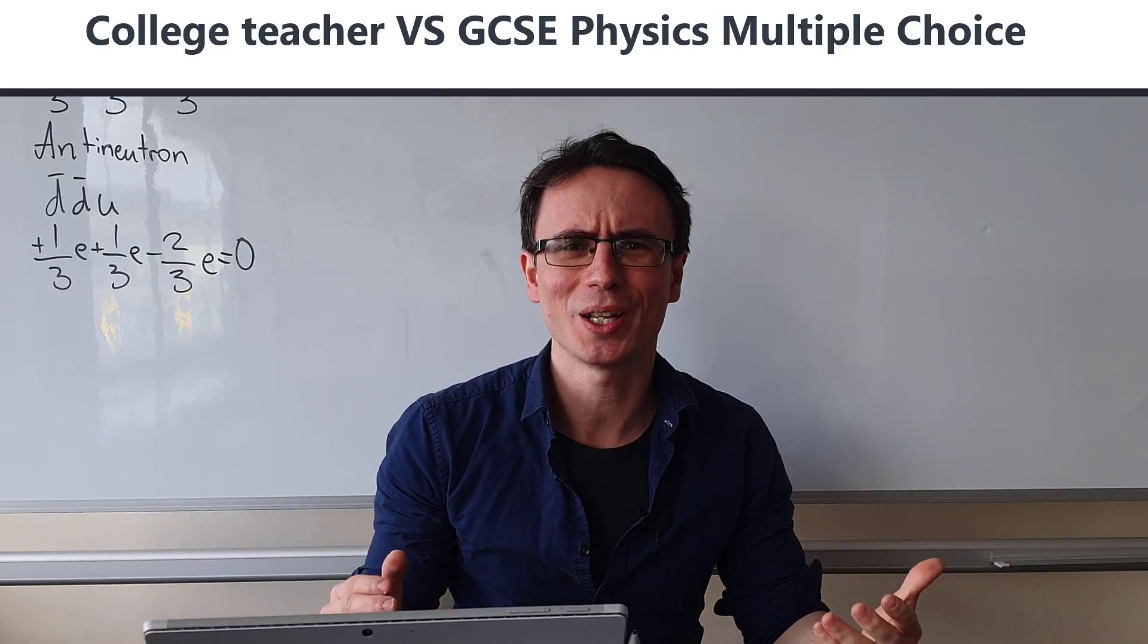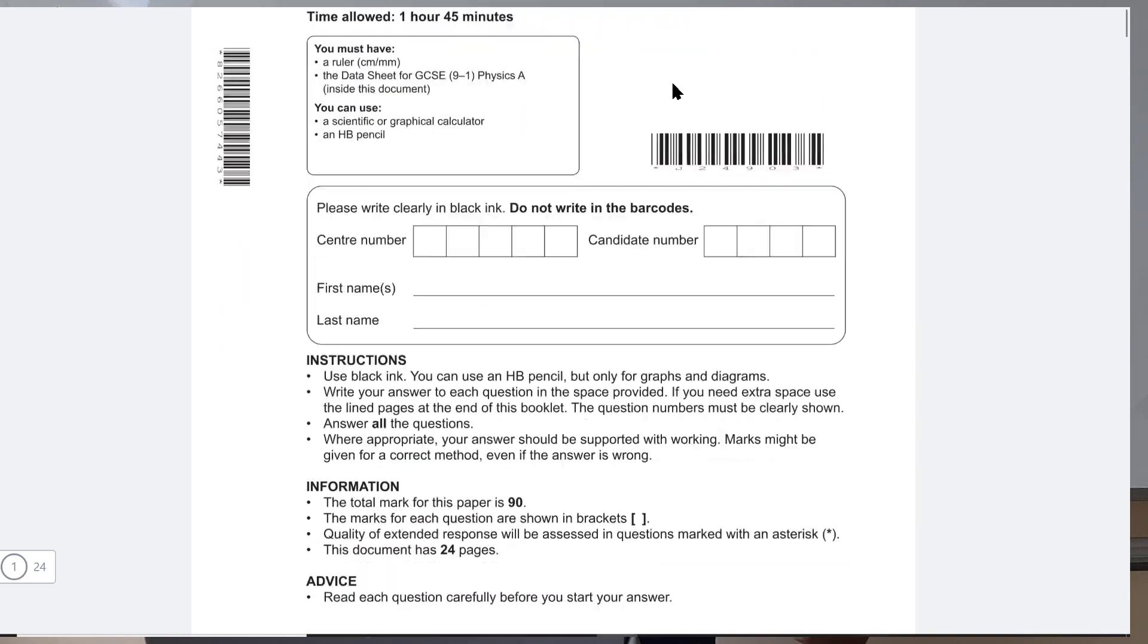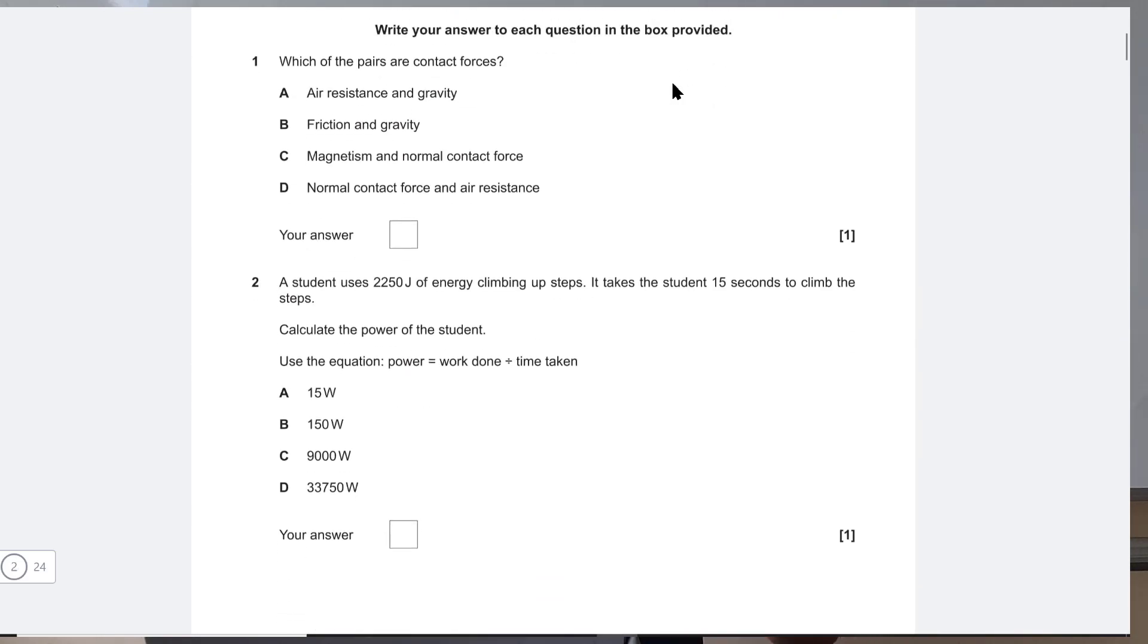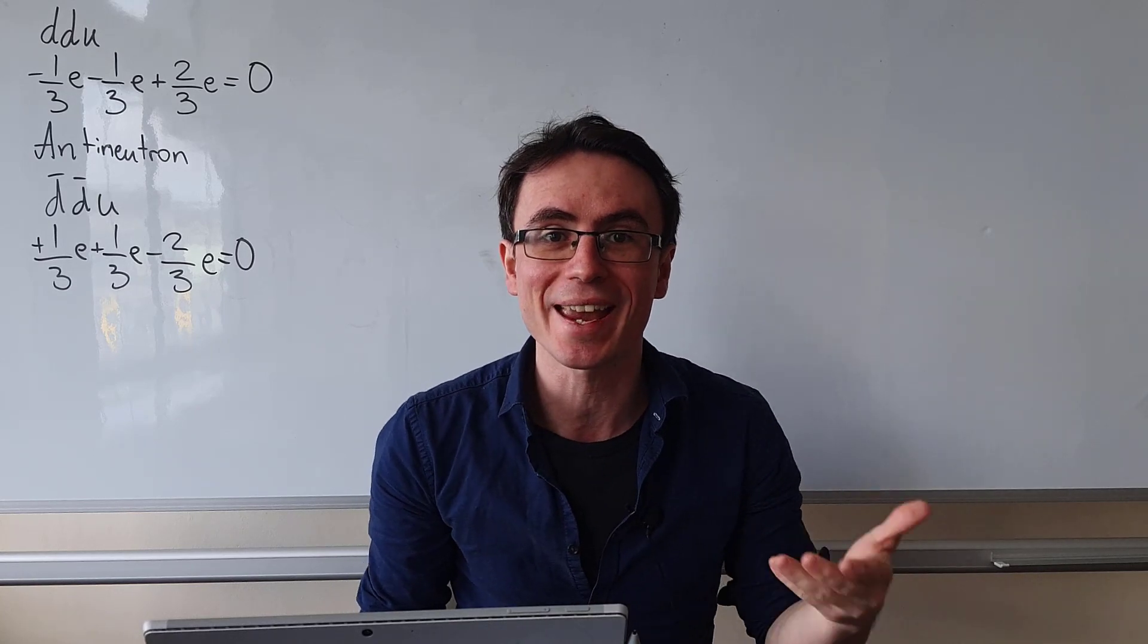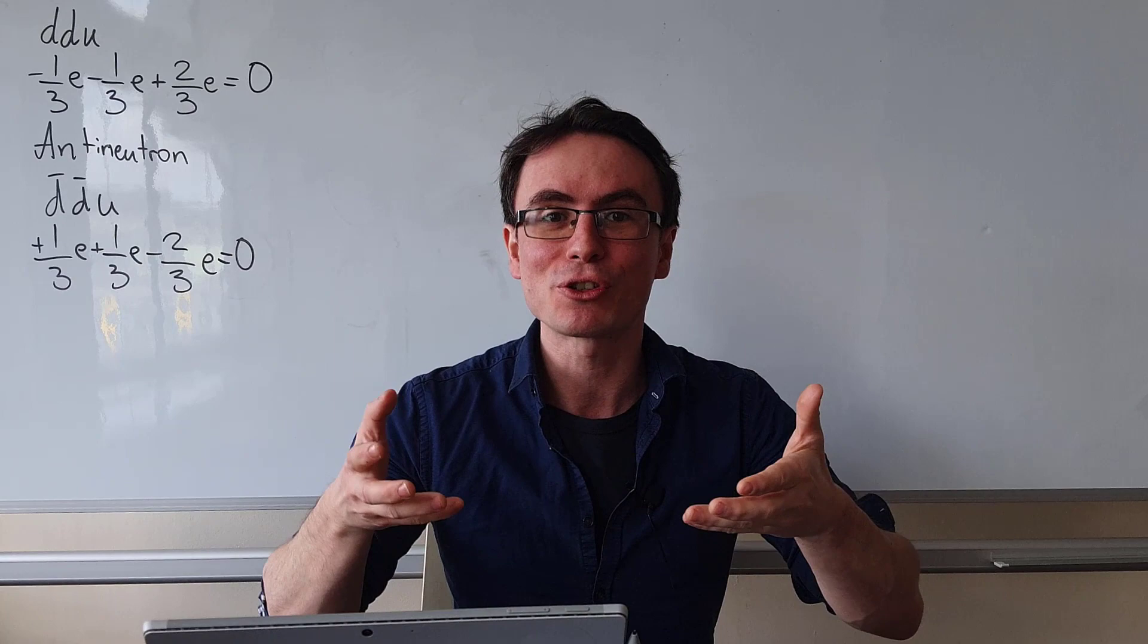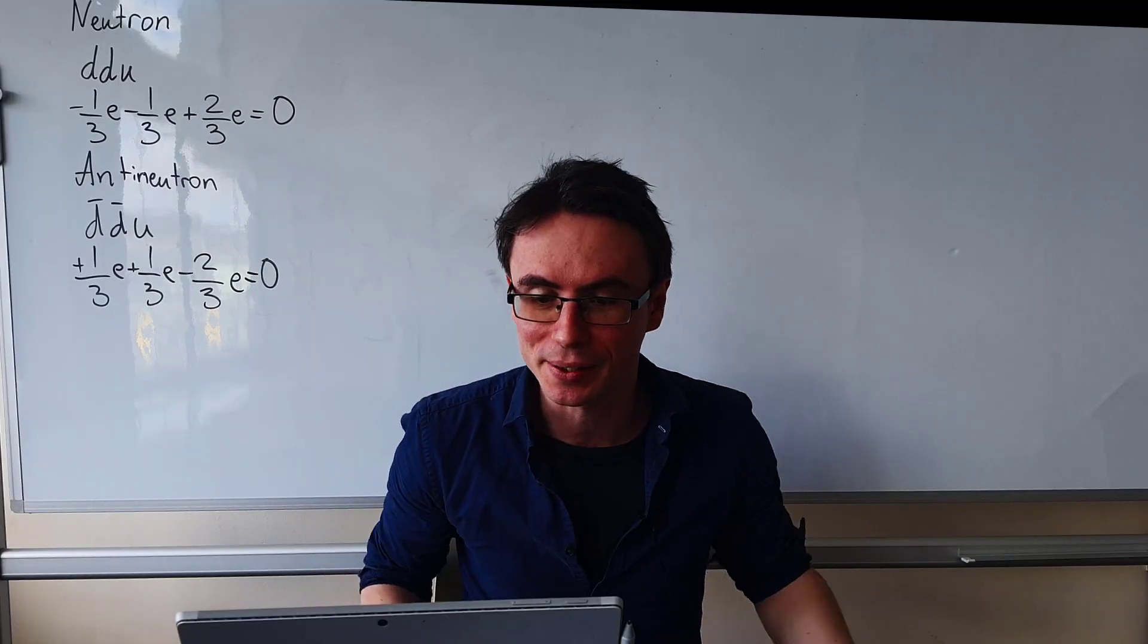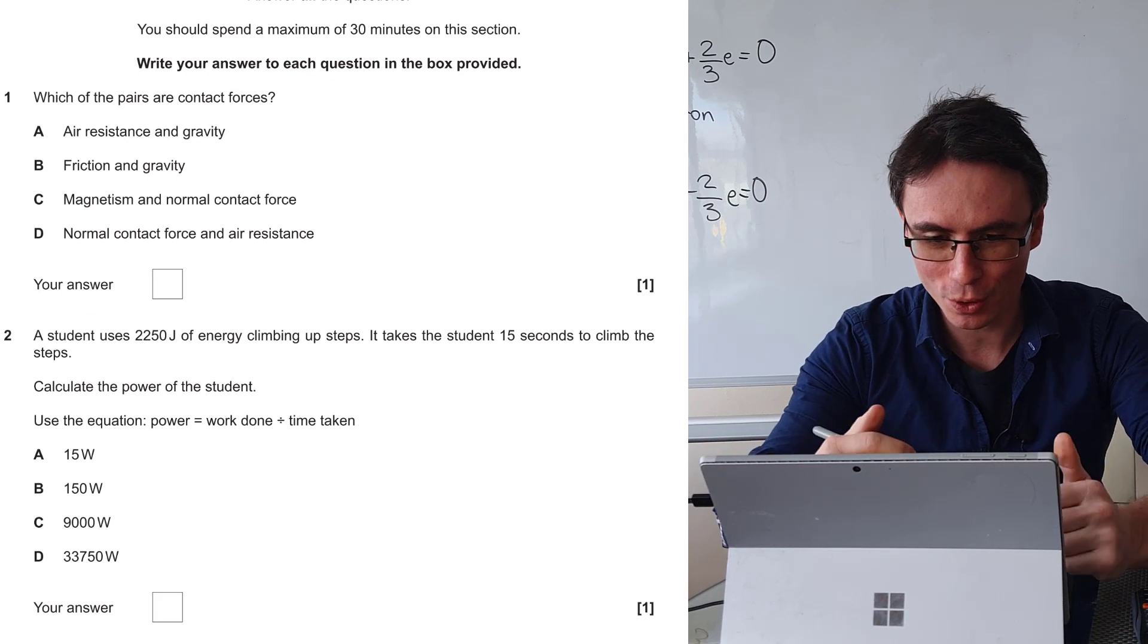So we teach A-level physics at a college in the UK. Let's see how I do at a GCSE paper. I've downloaded the 2020 OCR Physics A GCSE paper 3. I'm going to be solving it with you guys. Question one, I'm going to start off with the multiple choice.